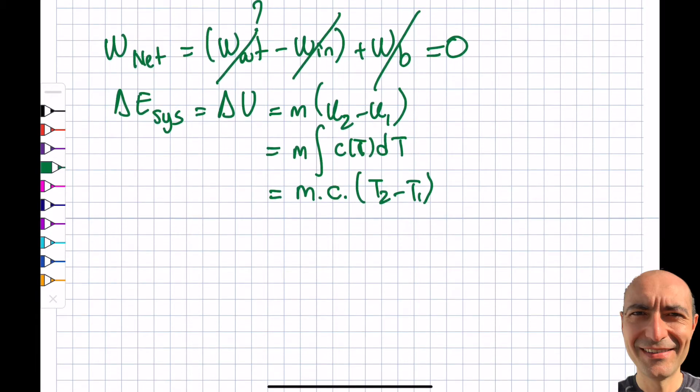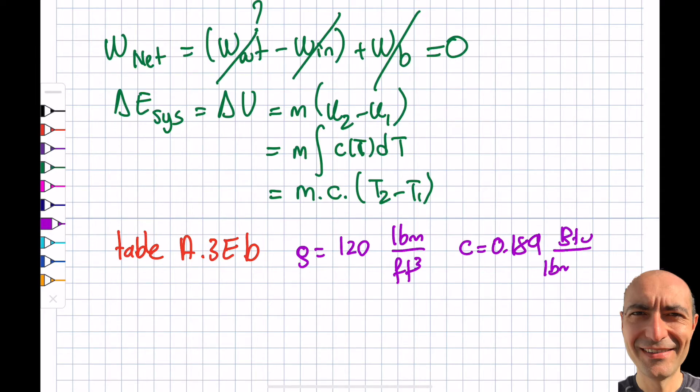So the only question now is where am I going to find this N and C values? I'm given the dimensions. So then I will approach table A3EB, which lists all the information related to the solids. Now you find there, there's a brick. And they give you the density of it as 120 pound mass per feet cube. That's the density of the brick. And they also give you the C_p, it says C_p, but C is equal to C_p is equal to C_v, so I'm not going to write C_p. And that will be 0.189 BTU per pound mass times Rankine. So that information is key to find this solution to this question.